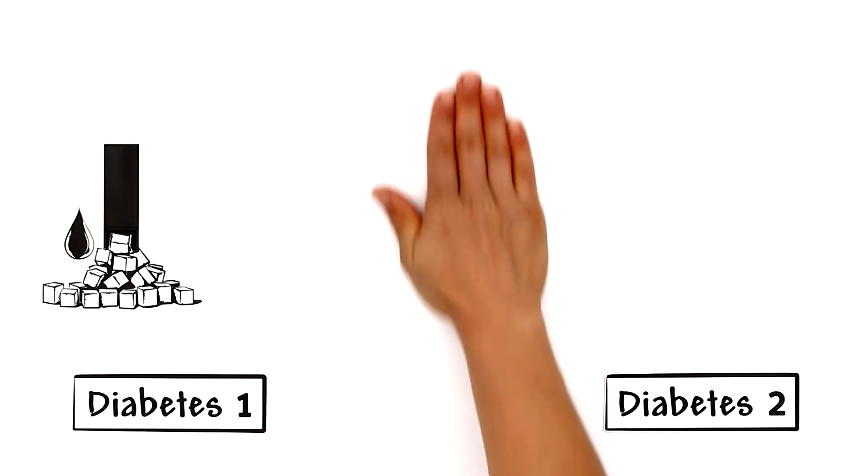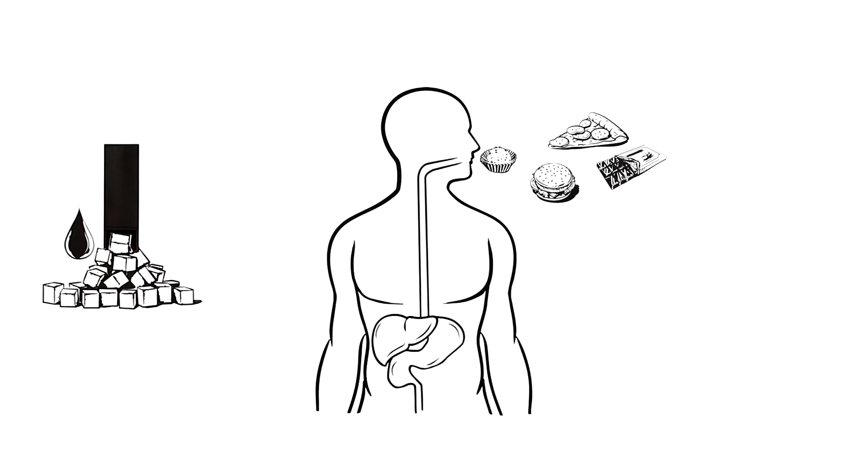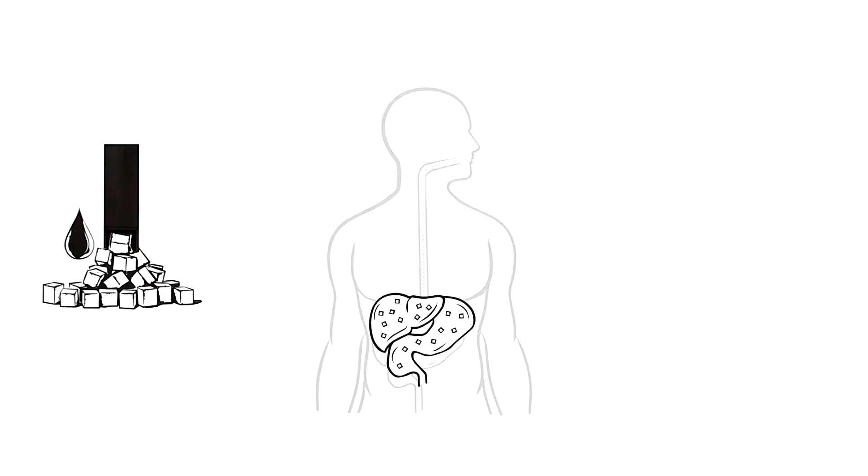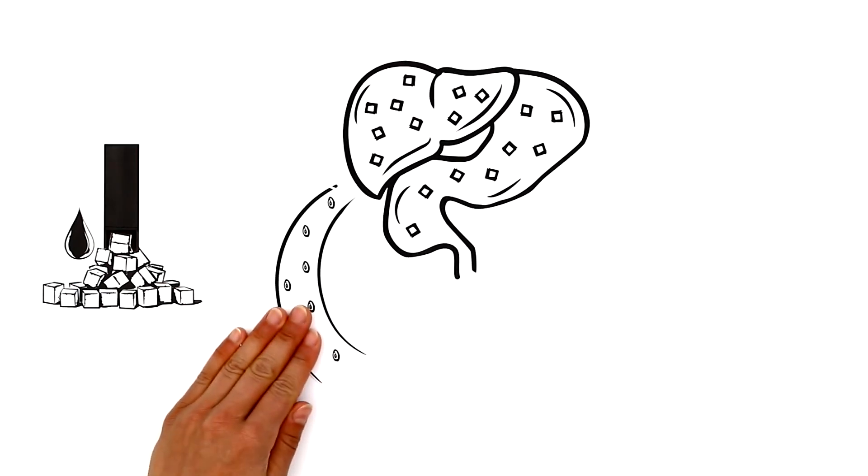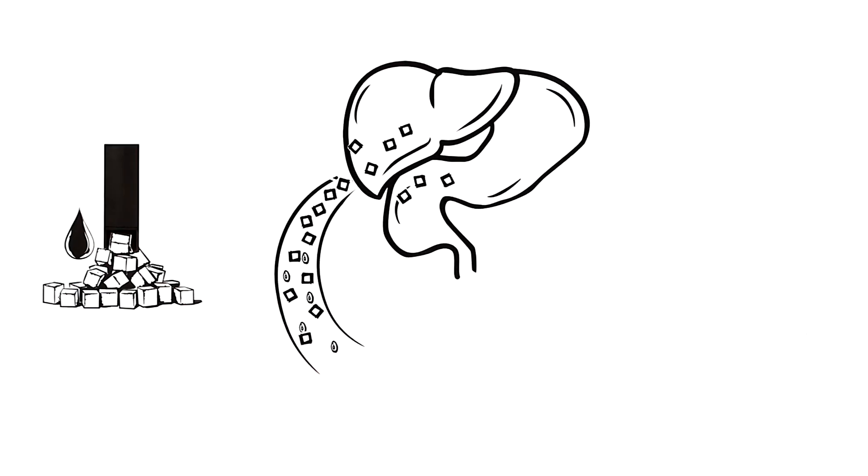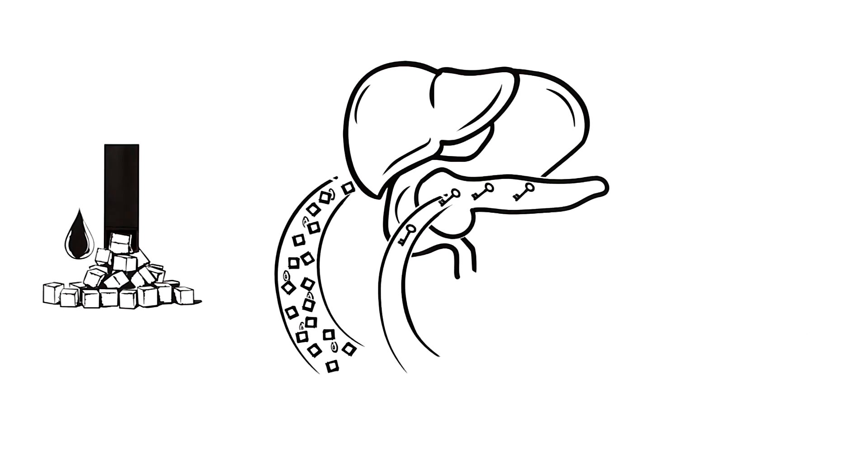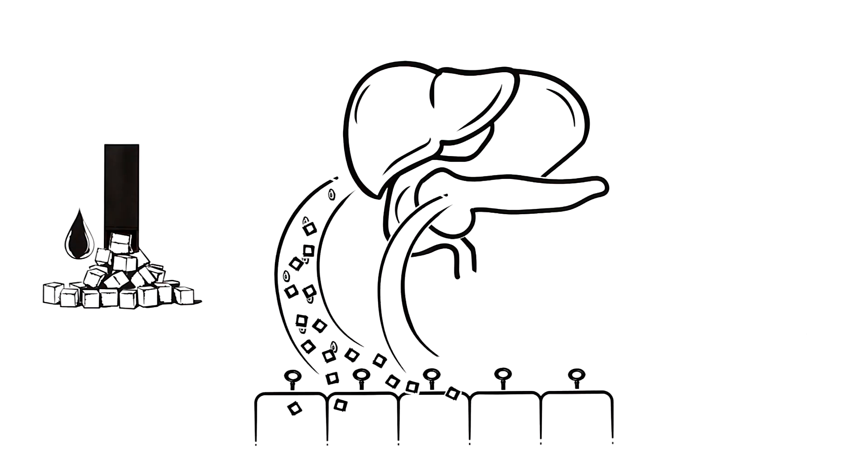But what causes it? Through the food we eat, we take in carbohydrates, which are converted by the stomach and liver into glucose. From there, they enter the bloodstream. Next, the pancreas releases the insulin hormone. This ensures that the muscle and fat cells open to absorb the energy producing glucose and the blood sugar level lowers.